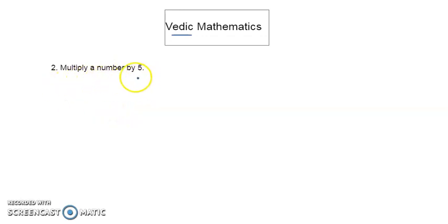How can we multiply a number by 5? If the number is an even number, this is the method. In case of even numbers, with an example we can see.